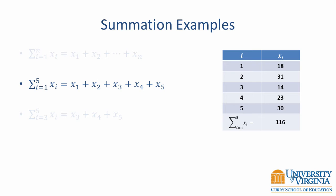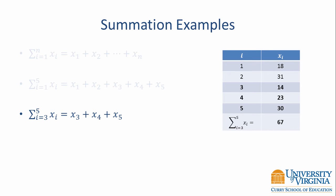Pay close attention to the starting and ending values of the index, because they don't always start at 1 and they don't always end at the last value in your data set. In this example, we have the sum from i equals 3 to 5 of x sub i, which expands to x sub 3 plus x sub 4 plus x sub 5. In the context of our data, that becomes 14 plus 23 plus 30, which equals 67.